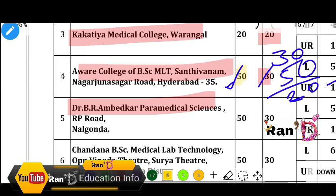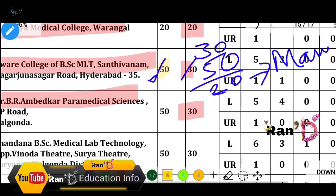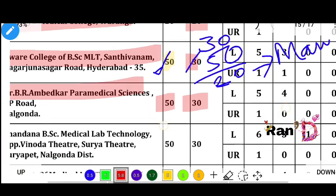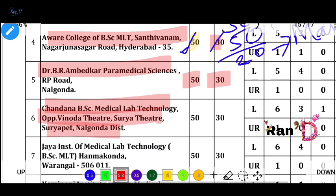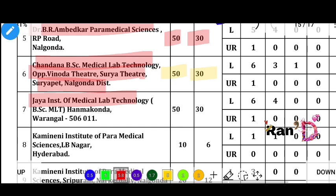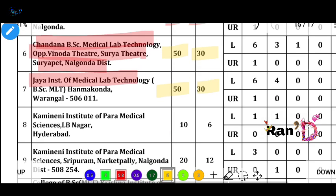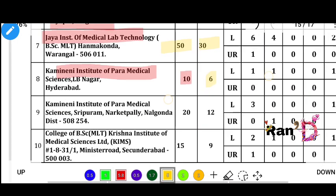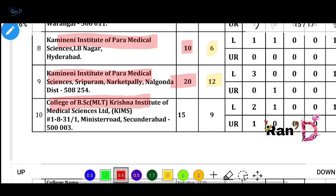Next college is Dr. B.A.R.A.P.A.M.A.S.S. - total intake is 50, with 30 converter quota seats and 20 management quota seats. Next is Achenthana BSE Medical College Medical Lab Technology with 50 total seats and 30 converter quota seats. Next is G.I. Institute of Medical Lab Technology with total intake of 50. Common Any Institute of Paramedical Sciences has 10 total seats with 6 OJC converter quota. G.C. Common Any Institute of Medical Sciences has 20 total intake - 8 OJC management and 2 OJC converter quota.